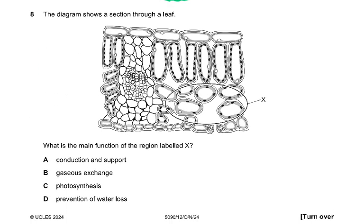Question 8: the diagram shows a section through a leaf. What is the main function of the region labeled X? The options are conduction and support, gaseous exchange, photosynthesis, or prevention of water loss. Prevention of water loss would involve a thicker cuticle and fewer stomata.